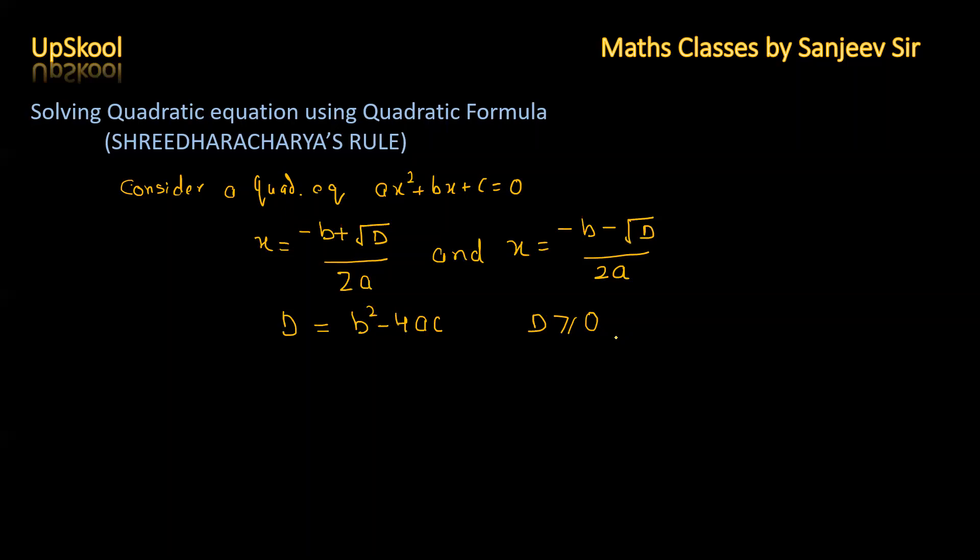To understand this formula let us take a question. 9x square plus 7x minus 2 is equal to 0. Comparing with our equation ax square plus bx plus c equal to 0.